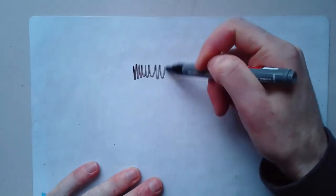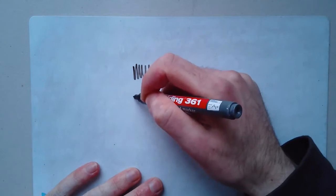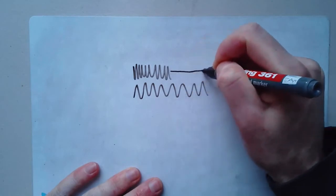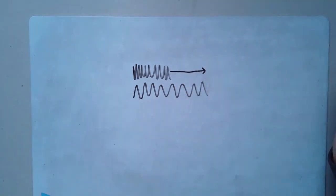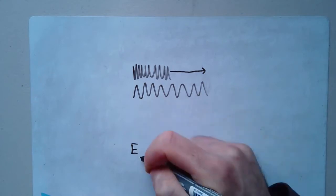Right, so let's say I've got a spring. It looks like this. Now, if I put energy in, I can stretch that spring out. So I can pull it out and stretch it to this point. It's now storing elastic potential energy, which we write as capital E with a little e underneath it.